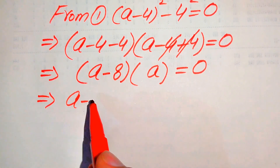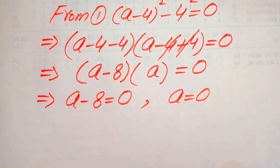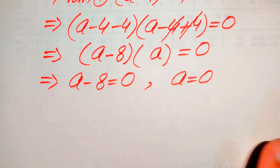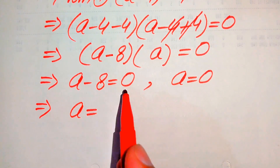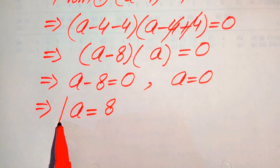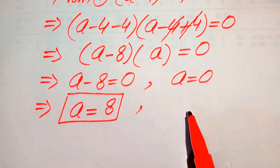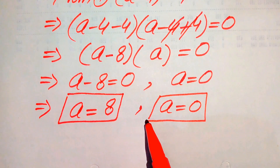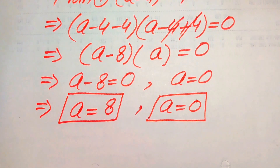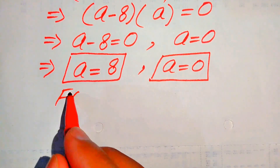Setting each factor equal to zero gives two cases: a - 8 = 0, so a = 8, and a = 0. These are the first and second real roots obtained from equation number one.